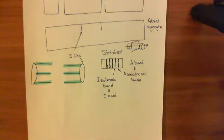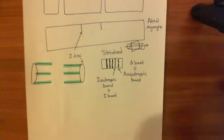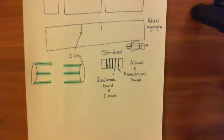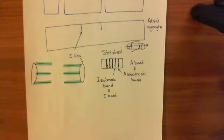Welcome back to this next video in which we are discussing cardiac muscle contraction. We're currently discussing the structure of the sarcomere, which is the contractile unit within cardiac muscle cells.